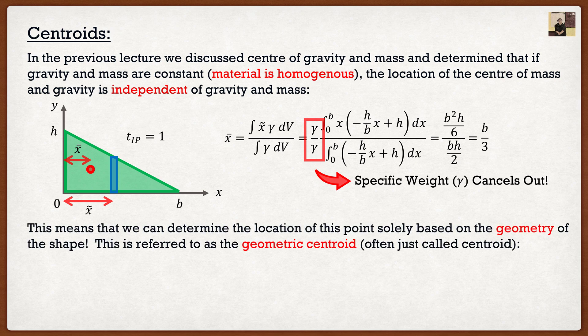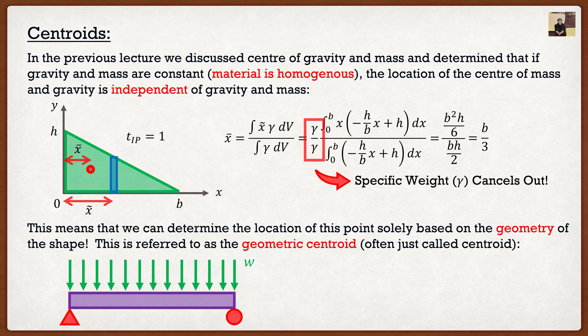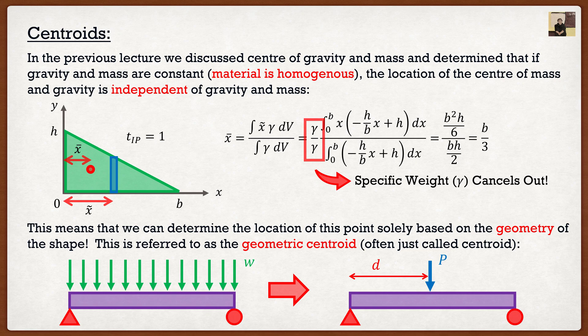When we find these points based on geometry alone, it is called the geometric centroid — or just centroid. This is something we've actually done many times before. Remember distributed loads on beams: we had a distributed load and converted it to an equivalent point load acting at a distance d. For a rectangular load, d is just the halfway point of the rectangle. All we needed to know was the geometry. That distance d was actually the x-component of the centroid.